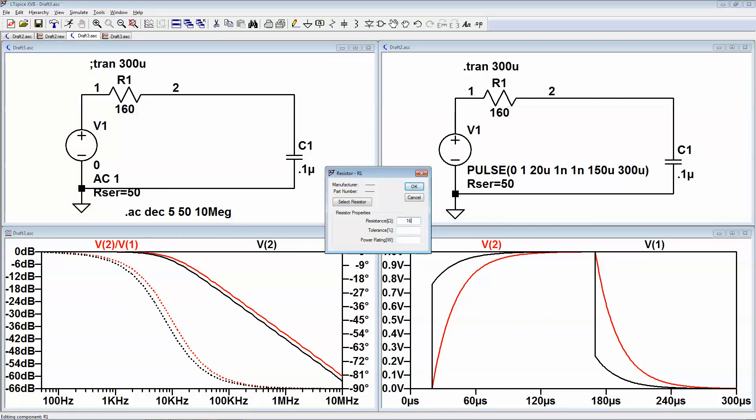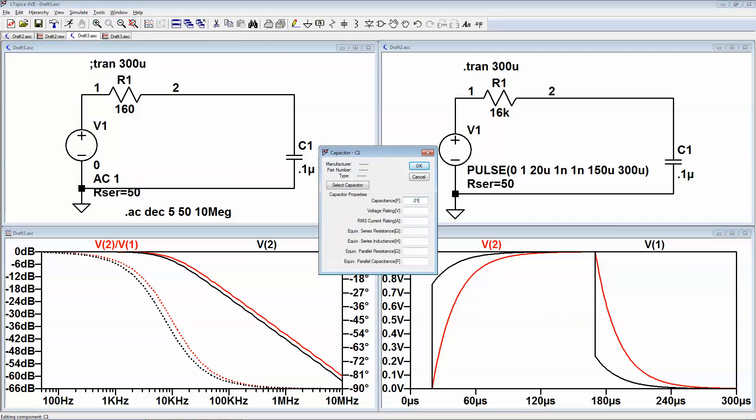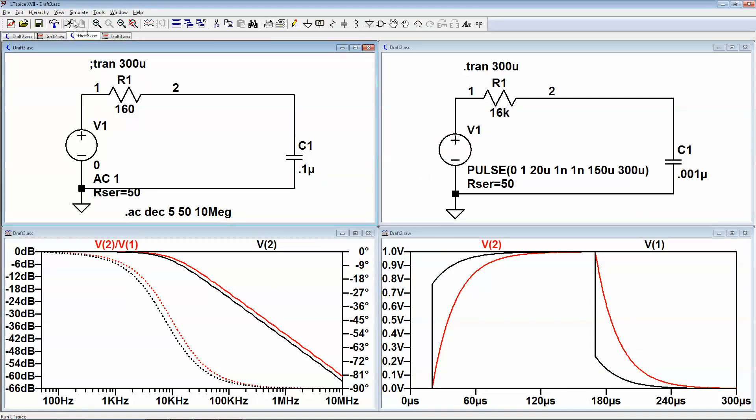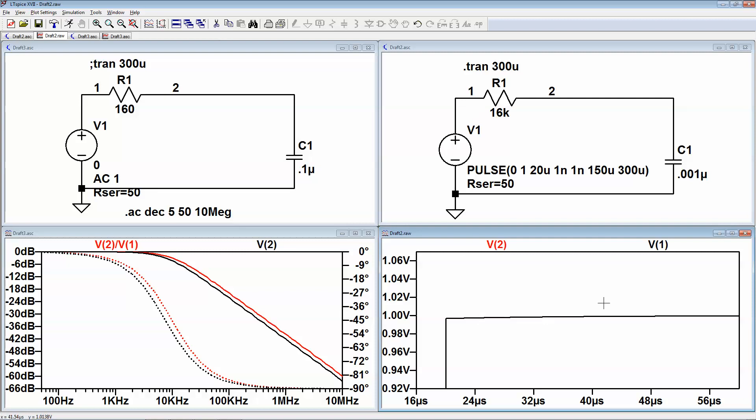And just to show you as a quick thing is, if you go to 16k and 1 microfarad, here should have the same time constant, but notice now it's sharper.